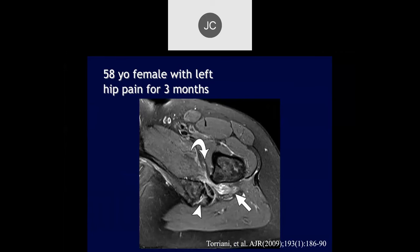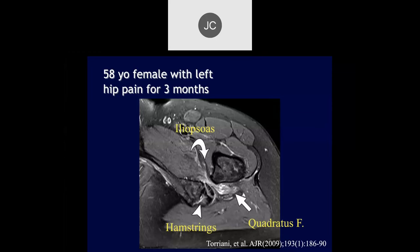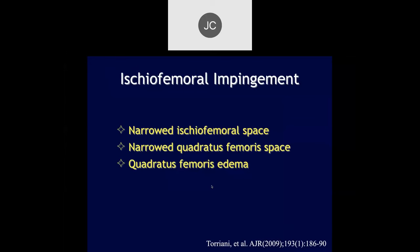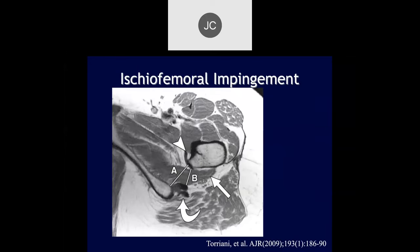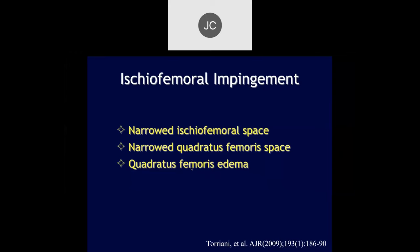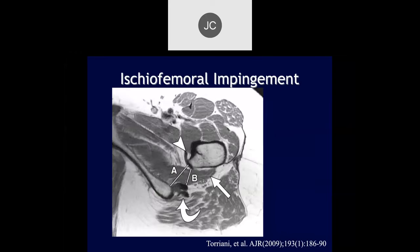Here's a 58-year-old female with left hip pain for three months — a more severe example where we can see marked narrowing between the femur and the ischium, with the hamstring origin showing thinning of the muscle and edema. What you look for with ischial femoral impingement is narrowing of the ischial femoral space, also narrowing of the quadratus femoris space and quadratus femoris edema.